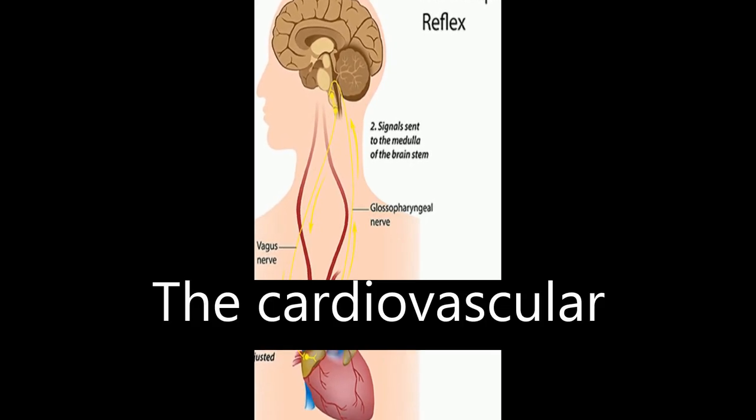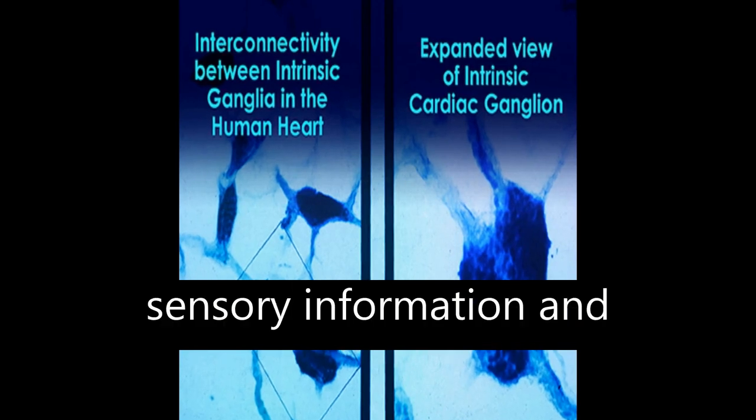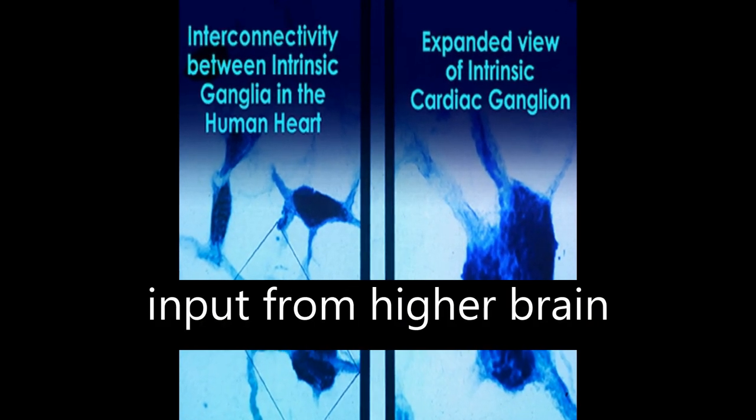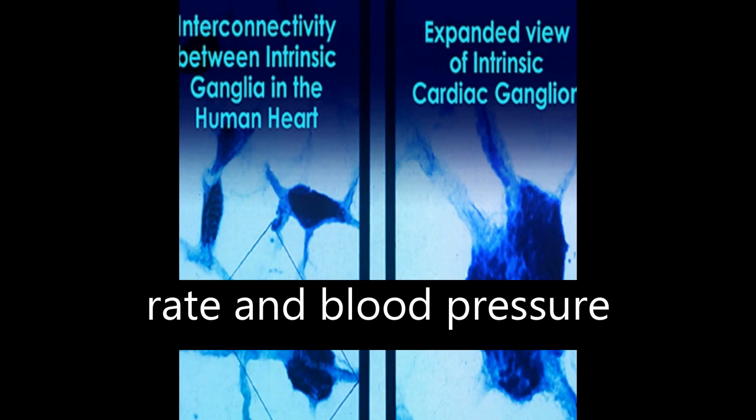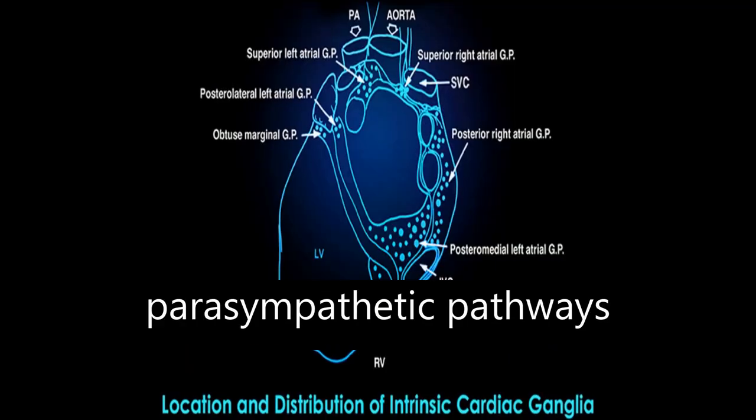The cardiovascular regulation center in the medulla integrates sensory information and input from higher brain centers to adjust heart rate and blood pressure via sympathetic and parasympathetic pathways.